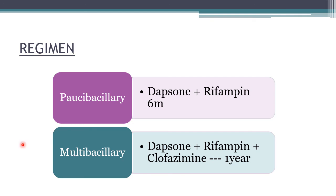Multi-drug therapy is used for leprosy to reduce resistance and shorten therapy duration. For paucibacillary leprosy: dapsone 100 mg daily plus rifampin 600 mg once monthly for 6 months. For multibacillary leprosy: dapsone 100 mg daily plus rifampin 600 mg once monthly plus clofazimine 300 mg once monthly followed by 50 mg daily, for one year.